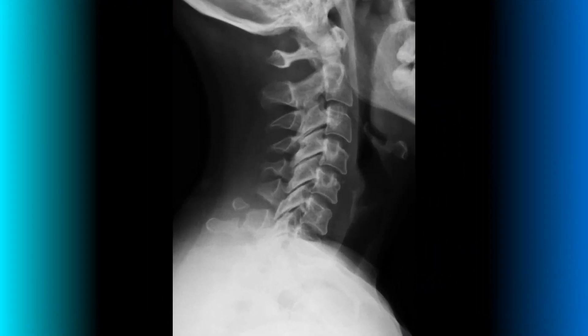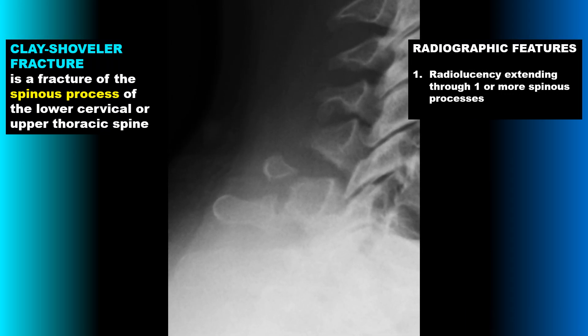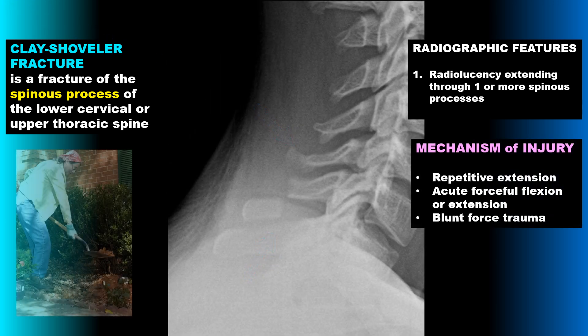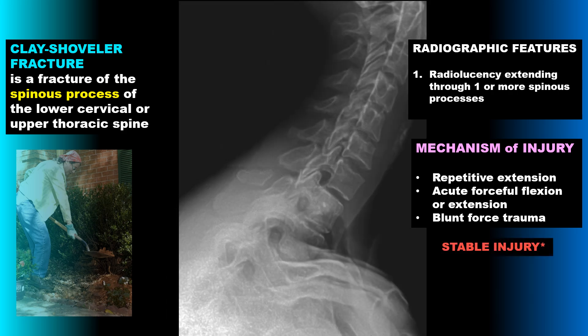Let's look at a common fracture in the cervical spine. A clay shoveler's fracture is a fracture of the spinous process of the lower cervical or upper thoracic spine. Radiographically, we're going to see a radiolucency extending through one or more of the spinous processes. The mechanism of injury is repetitive extension, acute forceful flexion-extension, or blunt force trauma. These types of cervical fractures are considered a stable injury.